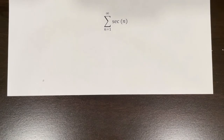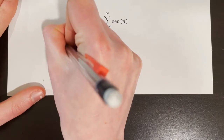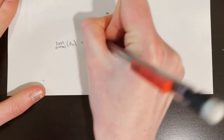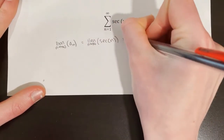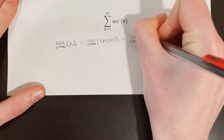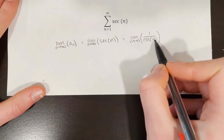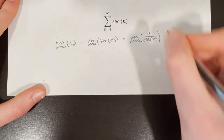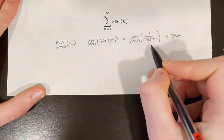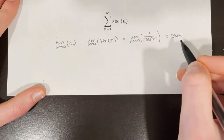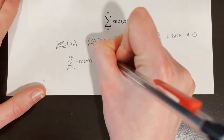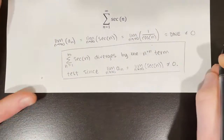For the series from n equals 1 to infinity of secant of n, let's try the nth term test. We take the limit as n approaches infinity of secant of n, which equals 1 over cosine of n. Cosine is an oscillating function — it never approaches a specific value as n goes to infinity. Since this limit does not exist, it cannot equal 0, so the series diverges by the nth term test.